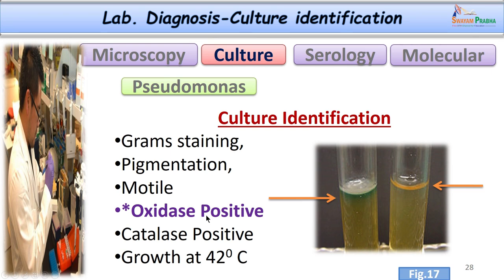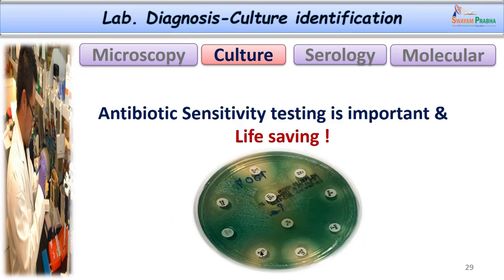After culture, identification is carried out by confirming morphology by gram staining, recording the pigments produced, noting the typical fruity odour, checking motility, and performing biochemical tests. Pseudomonas is oxidase positive, catalase positive, and a hardy organism that can grow at temperatures as high as 42 degrees Celsius.